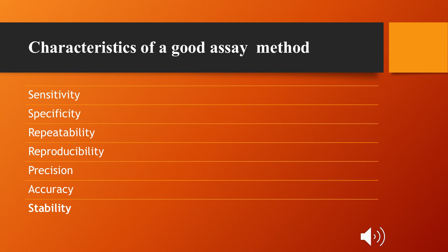Characteristics of a good assay method: the assay method should be sensitive, specific, and have repeatability — showing the same result in repeated experiments. It should also have reproducibility, precision, accuracy, and stability, meaning the tissue must remain bioassay-fit.